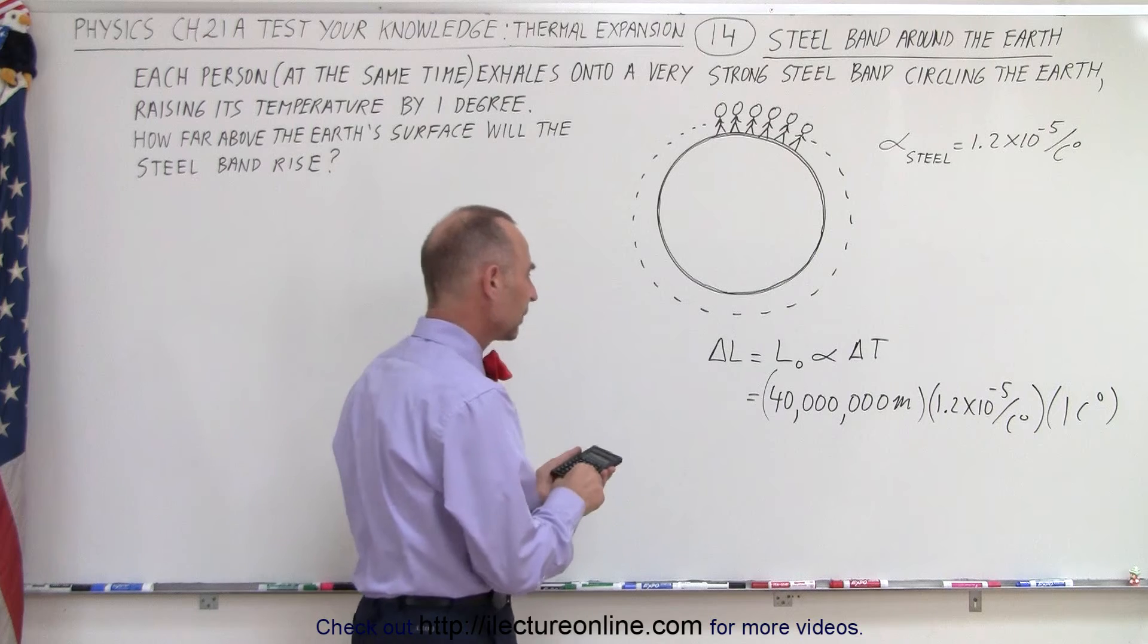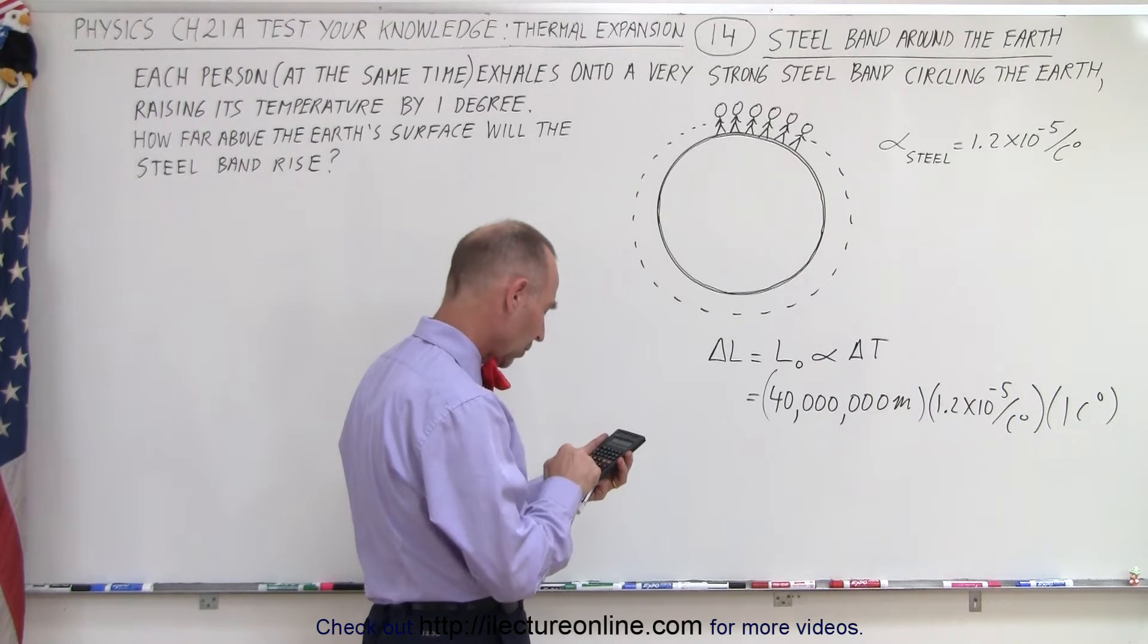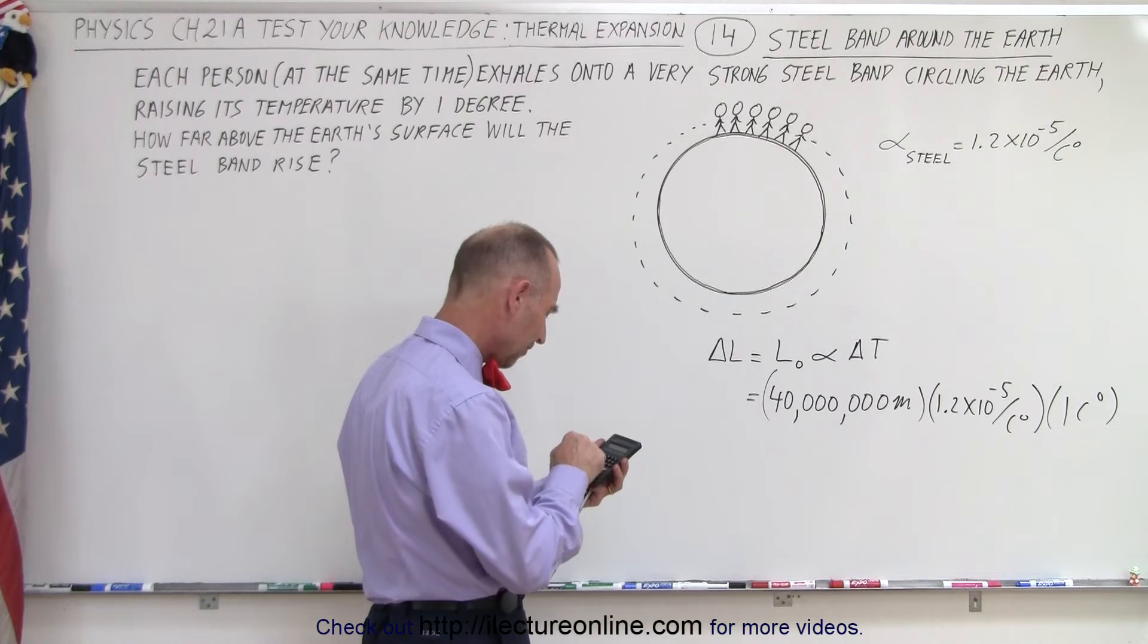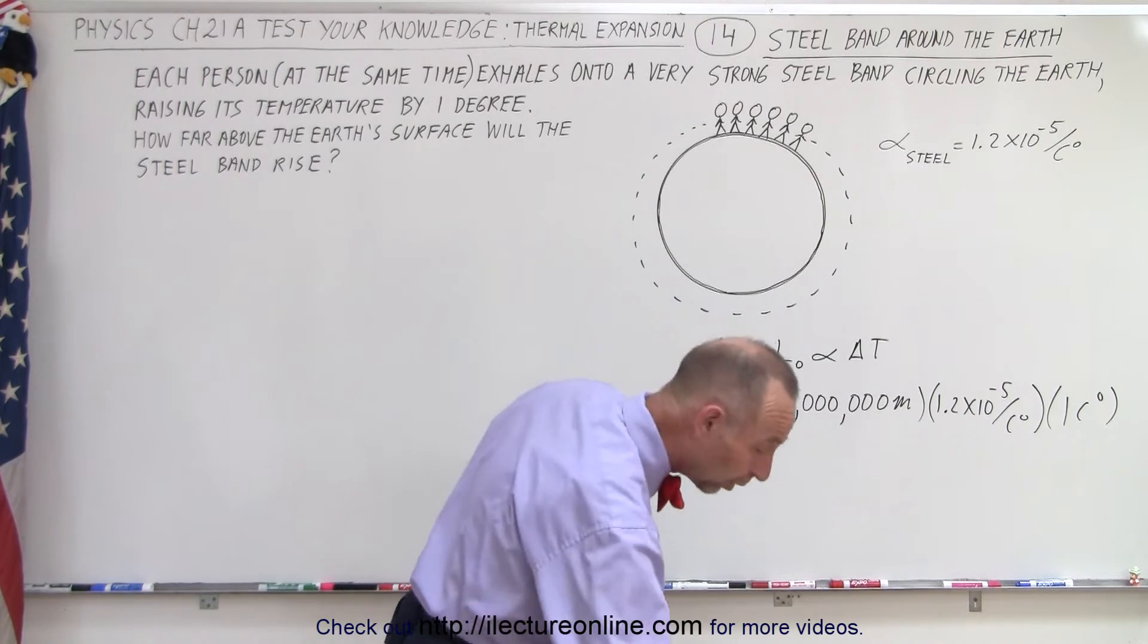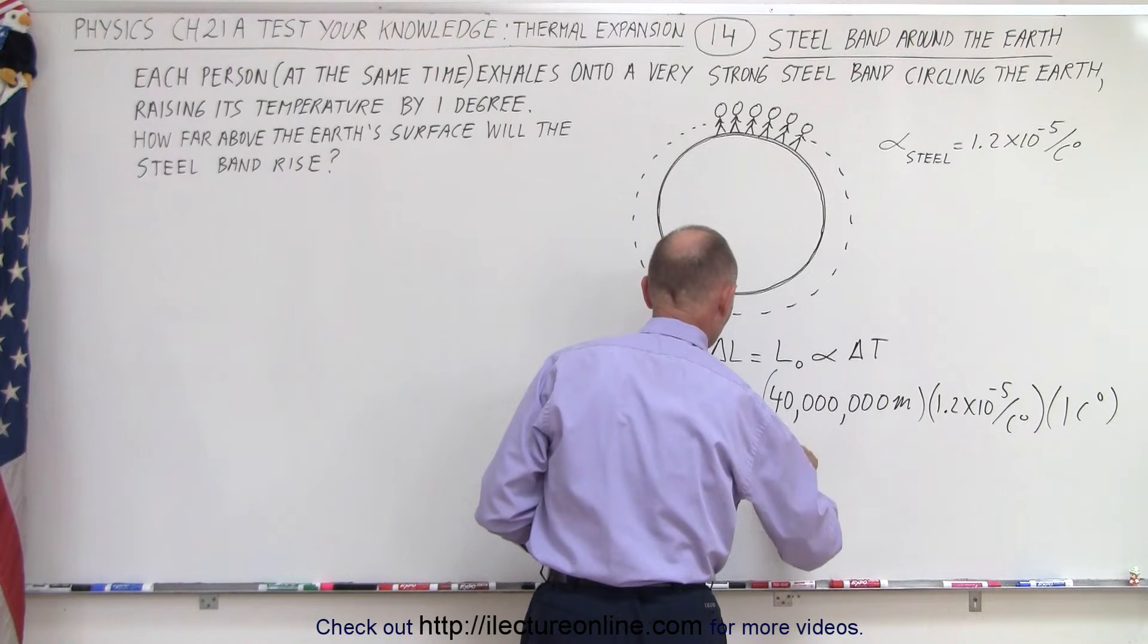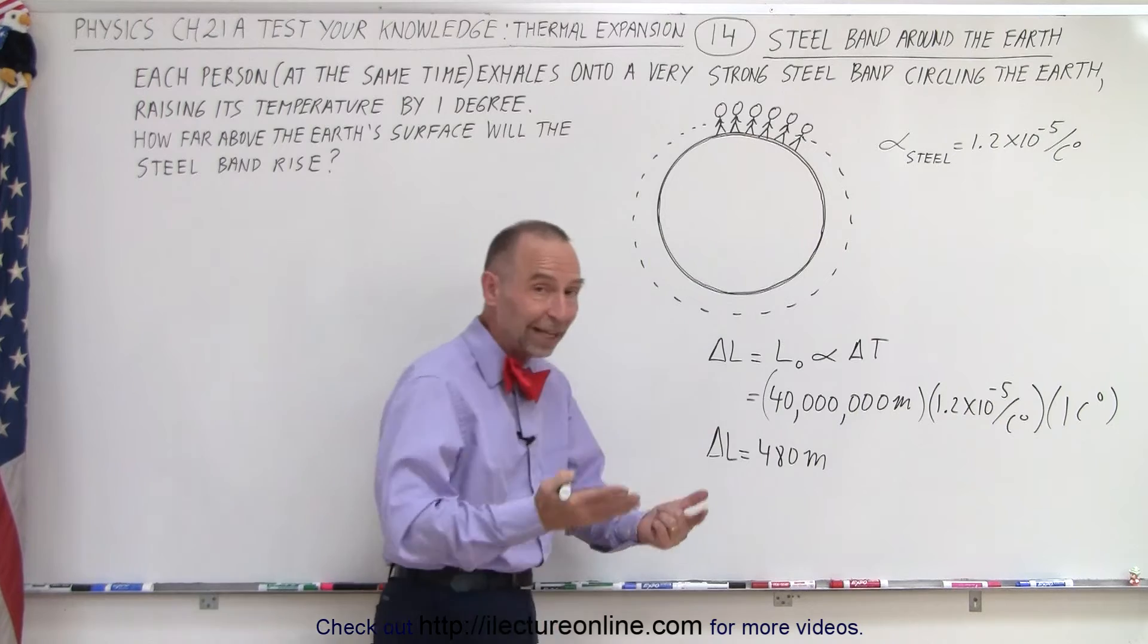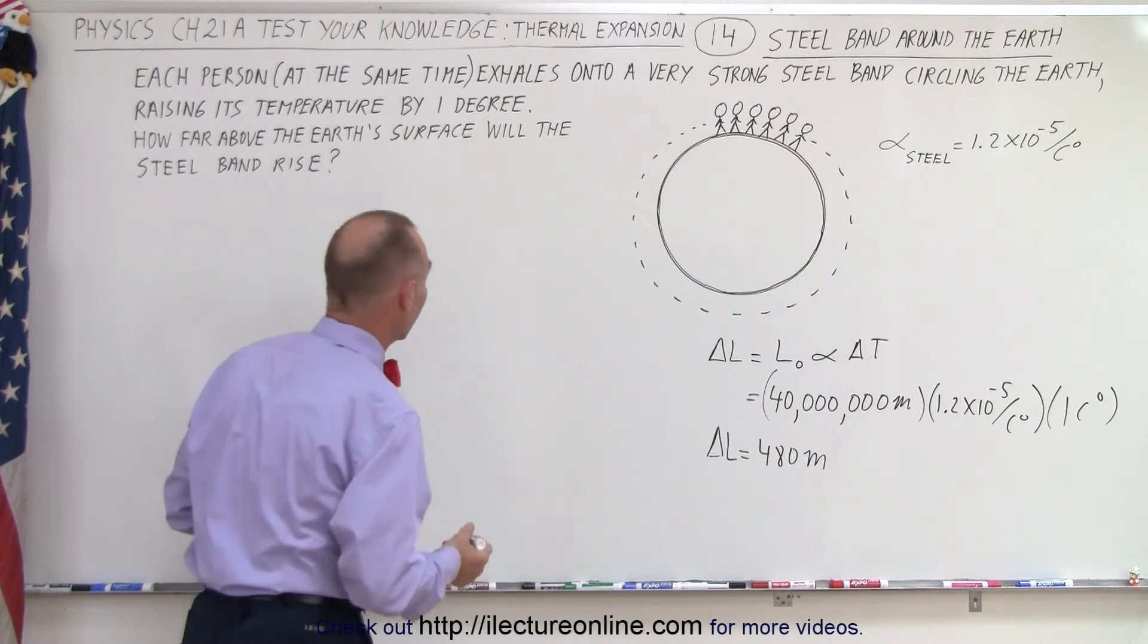Now how much will that be? So we have 40 million times 1.2 times 10 to the minus 5 equals 480 meters, so the additional length will be equal to 480 meters. Now how does that translate into rise of that band above the surface?